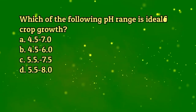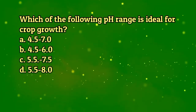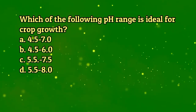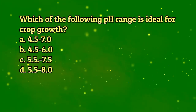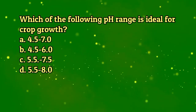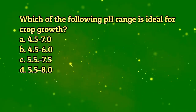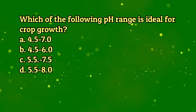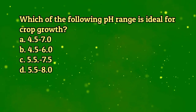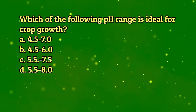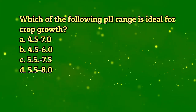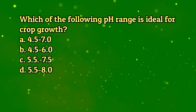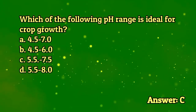Which of the following pH range is ideal for crop growth? A. 4.5 to 7. B. 4.5 to 6. C. 5.5 to 7.5. D. 5.5 to 8. The answer is letter C.